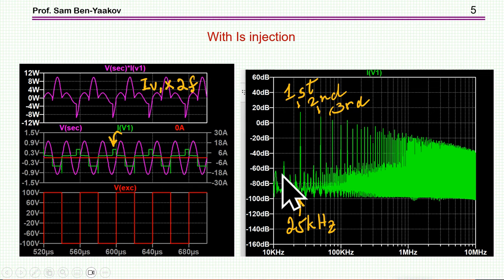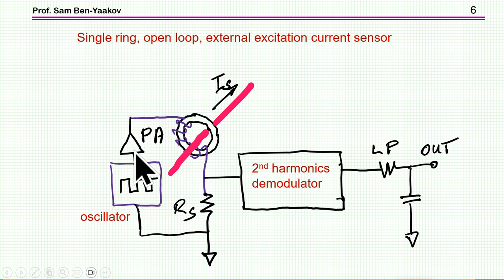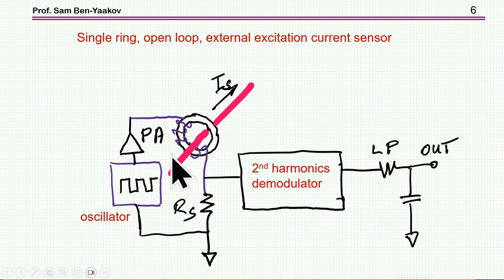We can use this behavior to build a very simple current sensing device. We have a toroid which is pushed towards saturation by a square wave. We have a power amplifier — we need quite a bit of current here. We look at the current and extract the second harmonic. We have a filter here, so this output represents the second harmonic, which is a function of the disturbance provided by the current we want to sense.